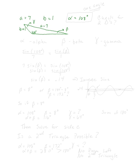Just for the record, let's clear the Greek letter thing up. This symbol is alpha — that one's pretty obvious — that's beta, and this one is gamma.